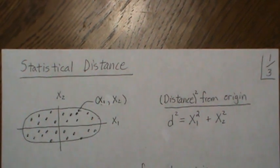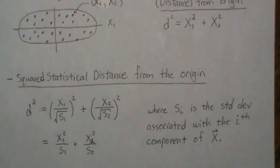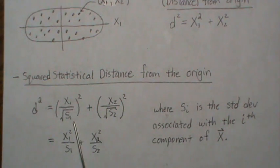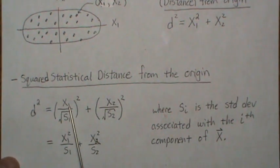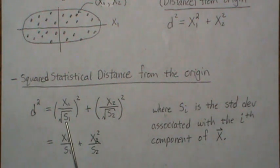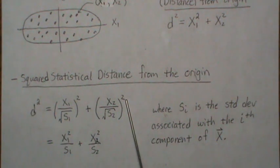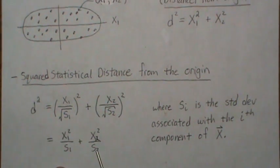And so what we do is this. So the squared statistical distance from the origin is this. So we take each, the X1 value and divide it by the square root of S, the standard deviation associated with X1. And then we square it, which, that's what we get here. And then we account for the variance or the standard deviation associated with X2 by dividing by the square root of S2, or the standard deviation associated with this way. And then we square it, and then this simplifies to this.